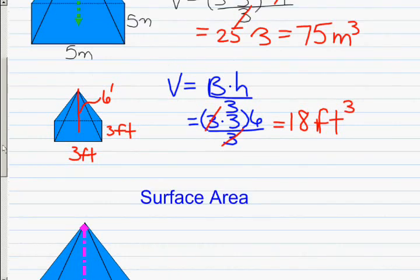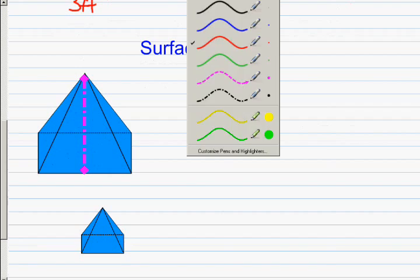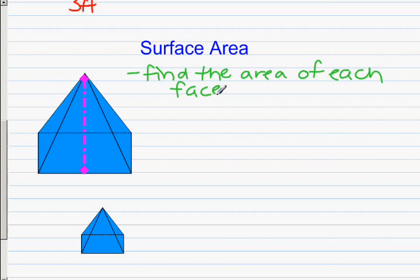Good job on volume, and next we're going to move on to the surface area. Now, surface area of a pyramid is a little bit harder because there's not quite a straight-up formula. But the idea of surface area is you find the area of each face, then add them all together.